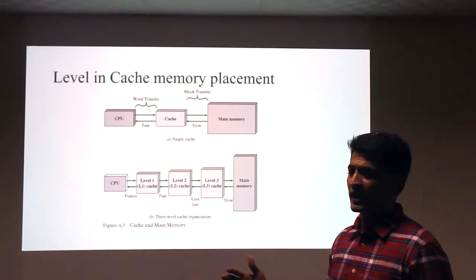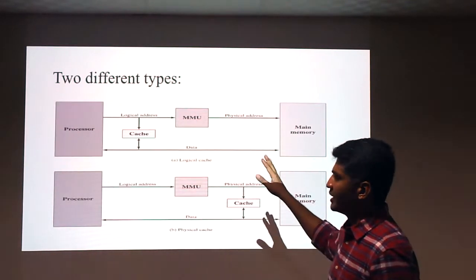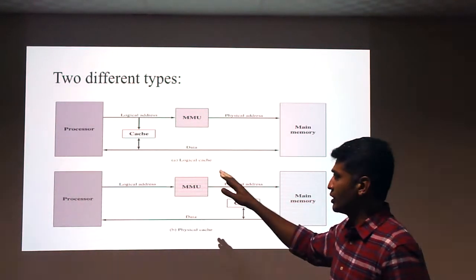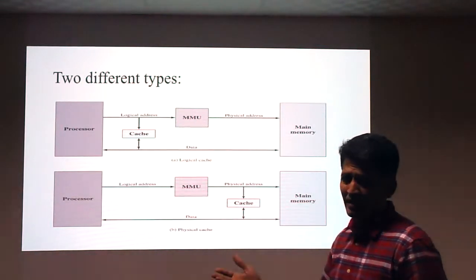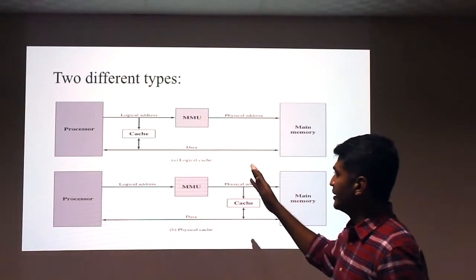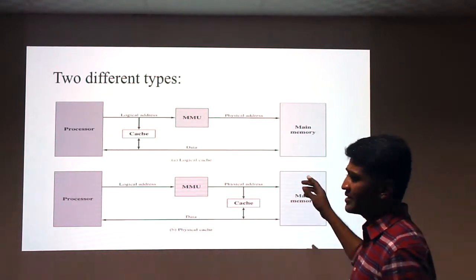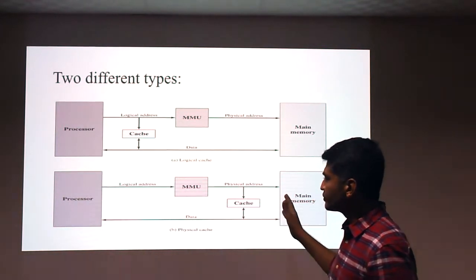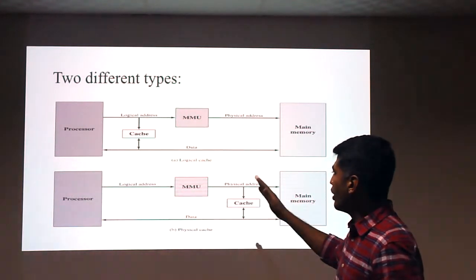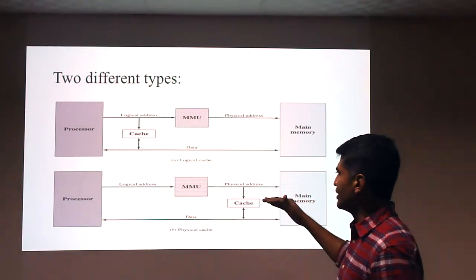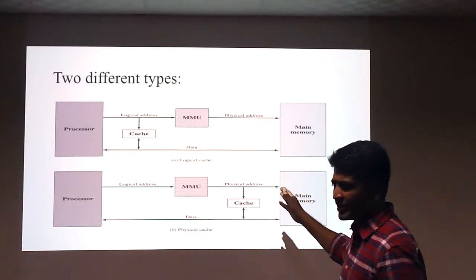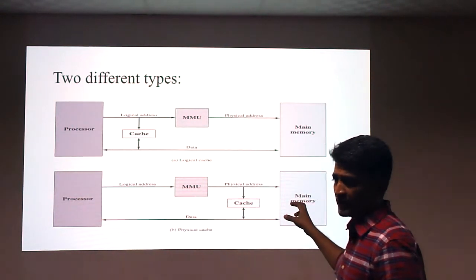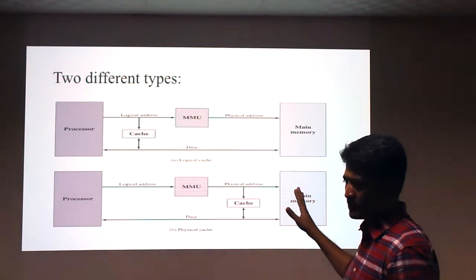The next diagram shows where the Memory Management Unit (MMU) is required. The processor generates a logical address, which needs to be mapped to a physical address — the exact location in main memory. The diagrams show cache placement both before and after the MMU.